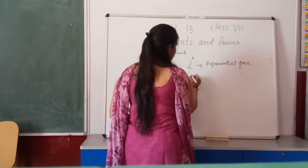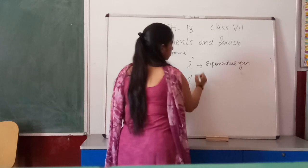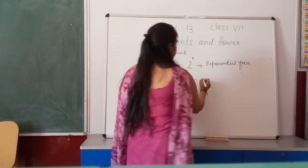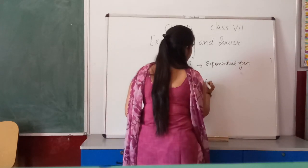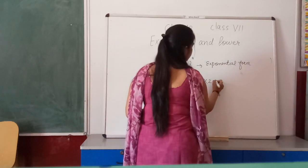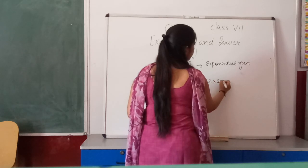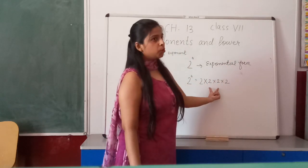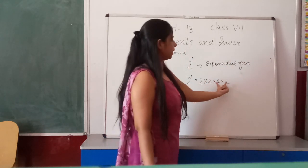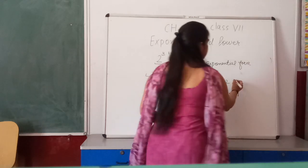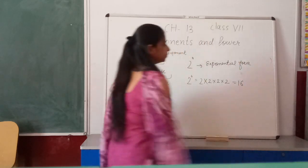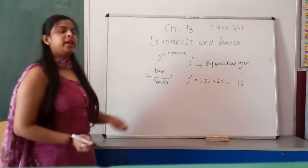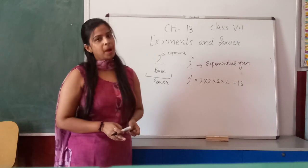2 raised to power 4 means 2 is multiplied 4 times. So we write 2 × 2 × 2 × 2. That gives 4, then 8, then 16. So 2 raised to power 4 equals 16. This is exponents and powers.